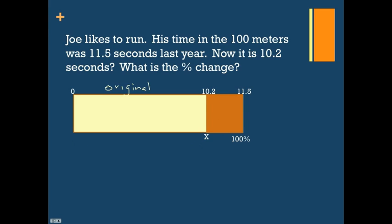We're going to again use that to set a proportion up. We're going to have 11.5 over 100 equals 10.2 over x. We can go ahead and set that up. We can cross multiply.